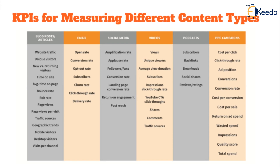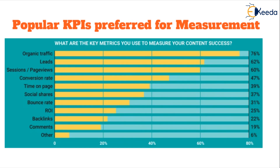For PPC — pay-per-click — campaigns, which form a bulk of what many content marketers produce, you can measure cost per click, click-through rate, ad position, conversions, conversion rate, cost per conversion, cost per sale, return on ad spend (ROI), wasted spend, impressions, quality score, and total spend. Many of these KPIs are readily available on platforms like Google Analytics and Google Ads — all you need to do is tag your relevant content correctly to ensure the right activity is tracked and informative dashboards are generated in real time.